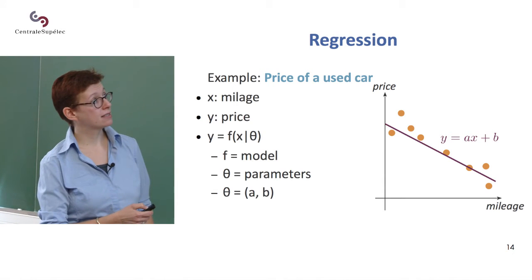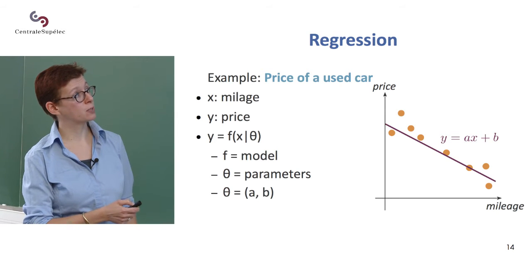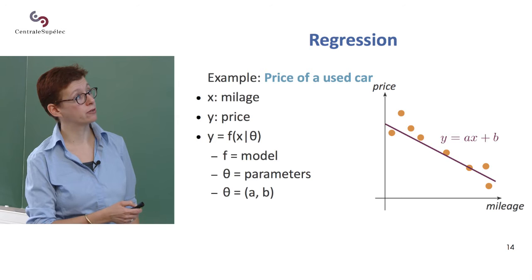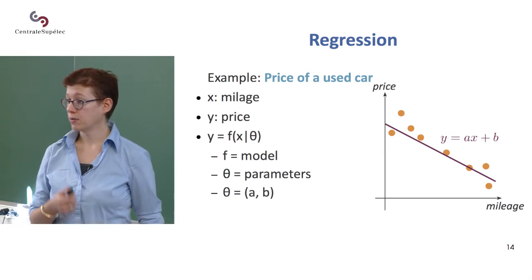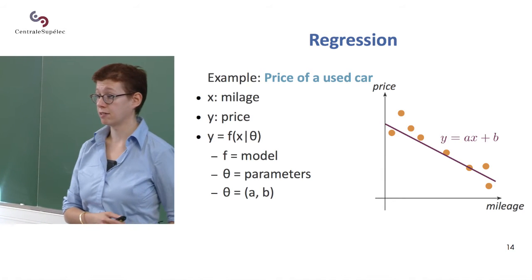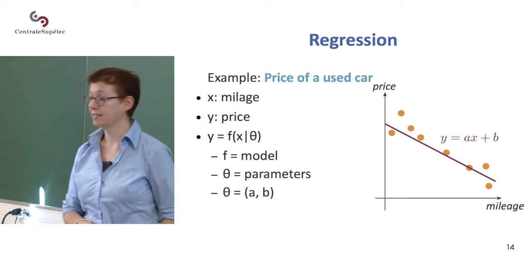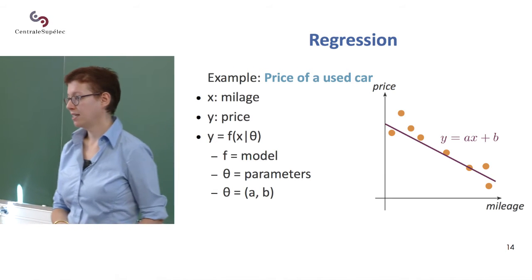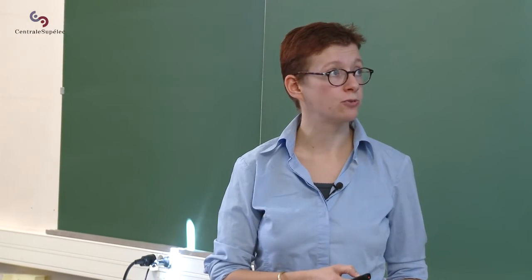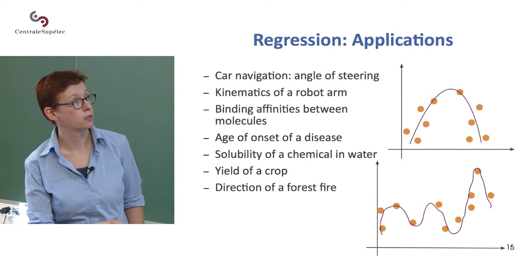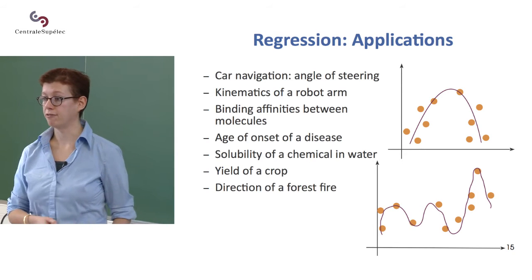Another way of writing that is that we want to find a function f, such that when applied to the variables x given some parameters theta, you get y out of it. This is a simple example of linear regression with one variable. You'll see we do a lot of linear regression in machine learning, usually with more than one variable. You can also do more complicated regressions — polynomial functions or other functions with odd shapes.